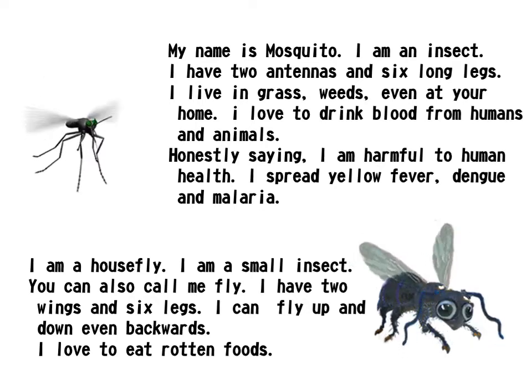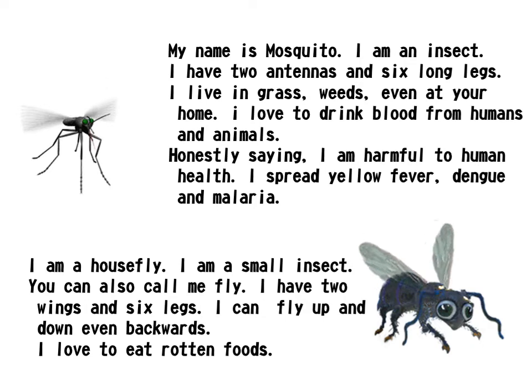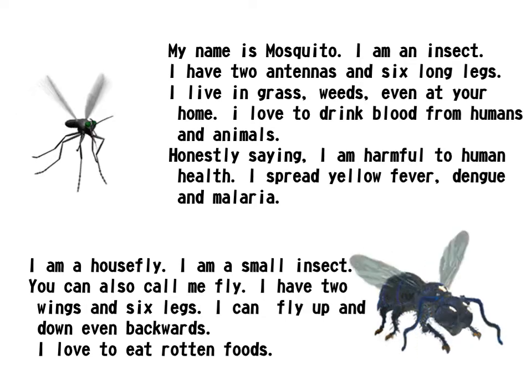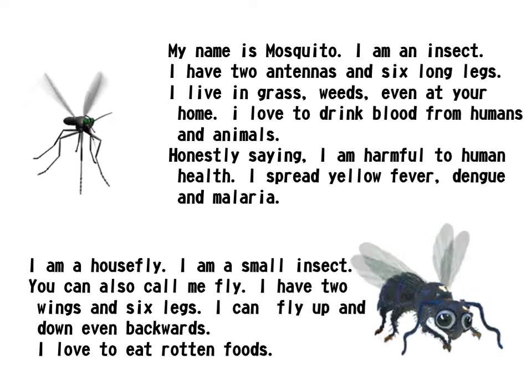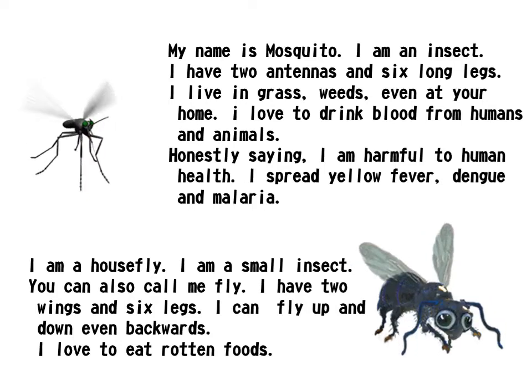I am a Housefly. I am a small insect. You can also call me fly. I have two wings and six legs. I can fly up and down, even backwards. I love to eat rotten foods.